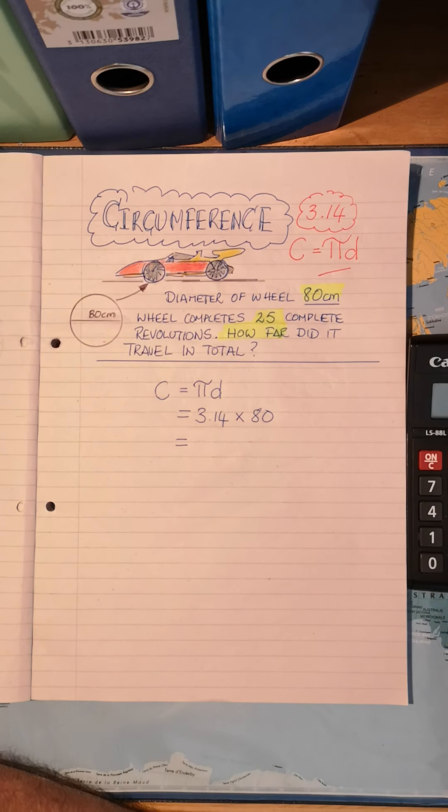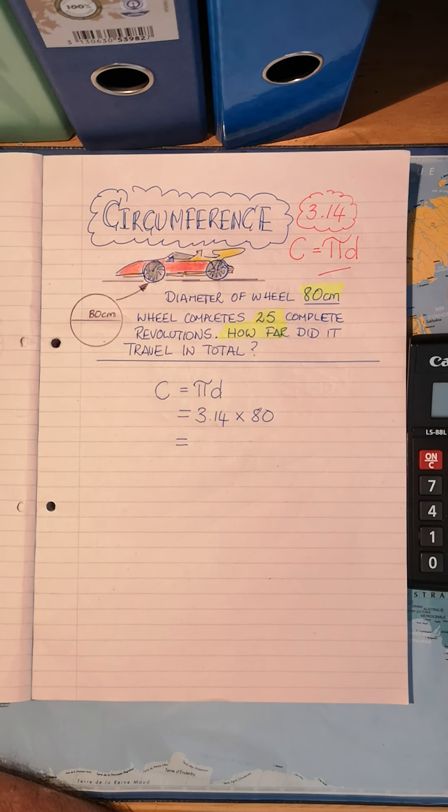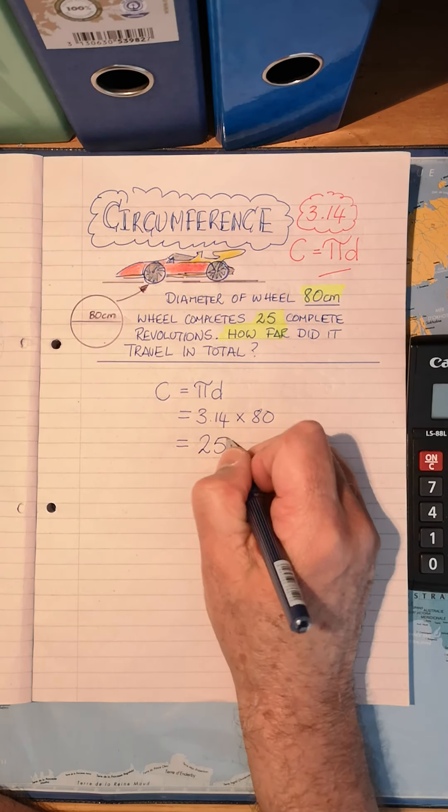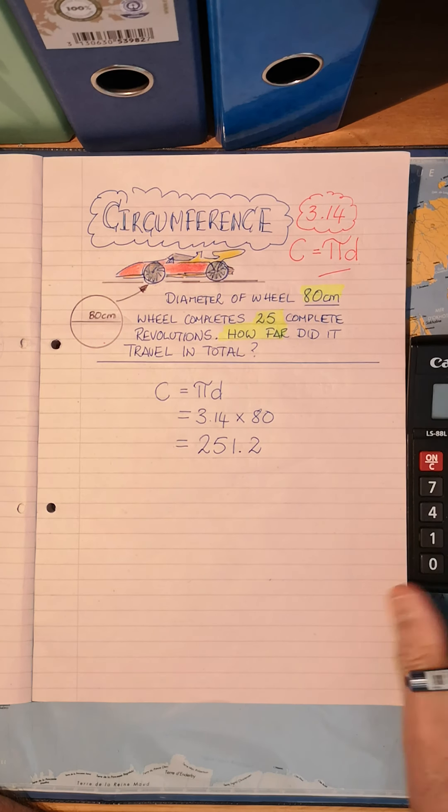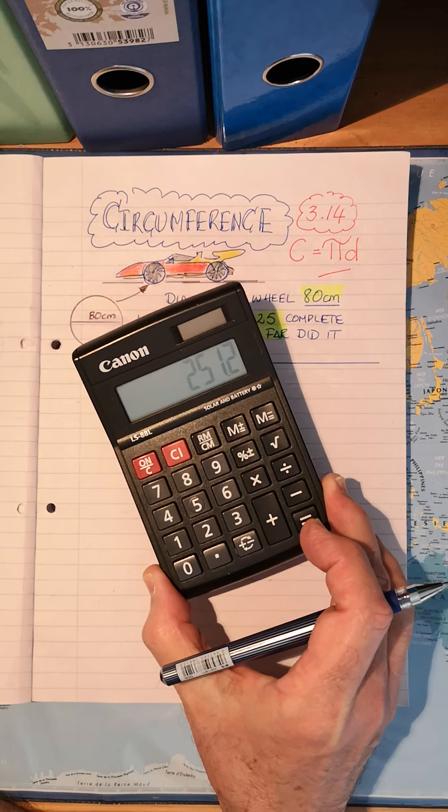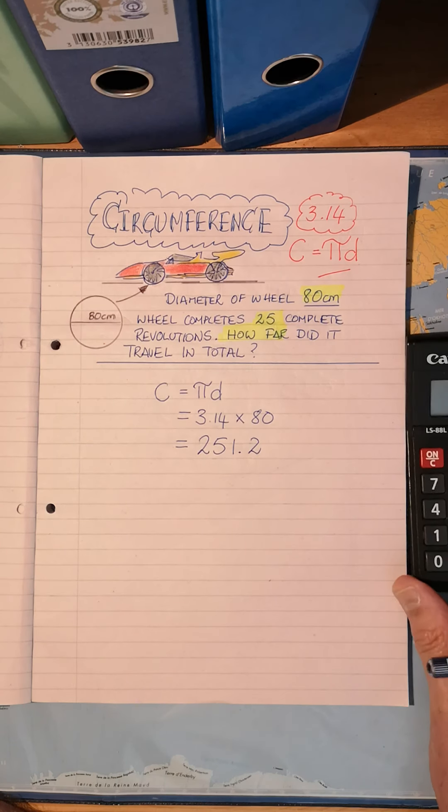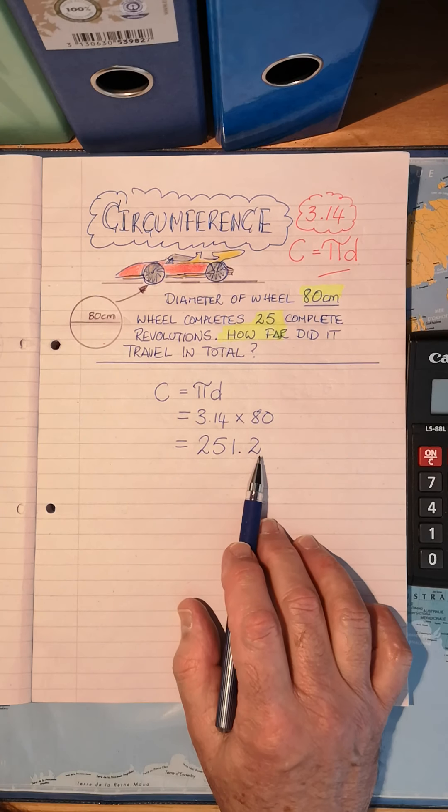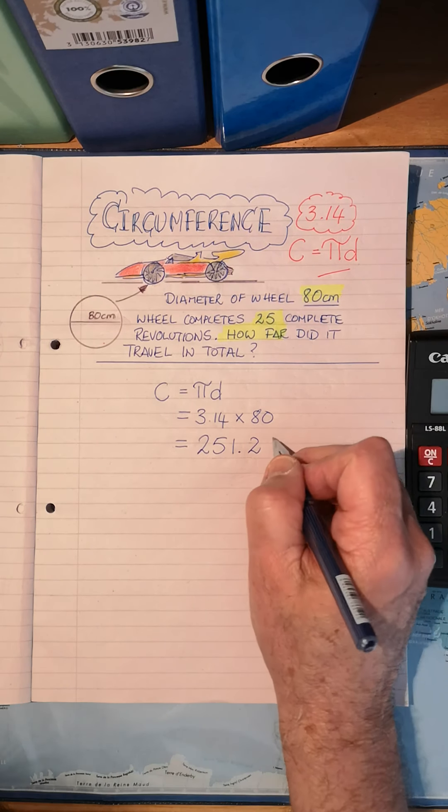Let's work that out. 3.14 times 80 gives me 251.2 with this calculator. Do remember sometimes other calculators will give you more digits after the decimal, but in this instance we've got 251.2. That is my circumference of the wheel.